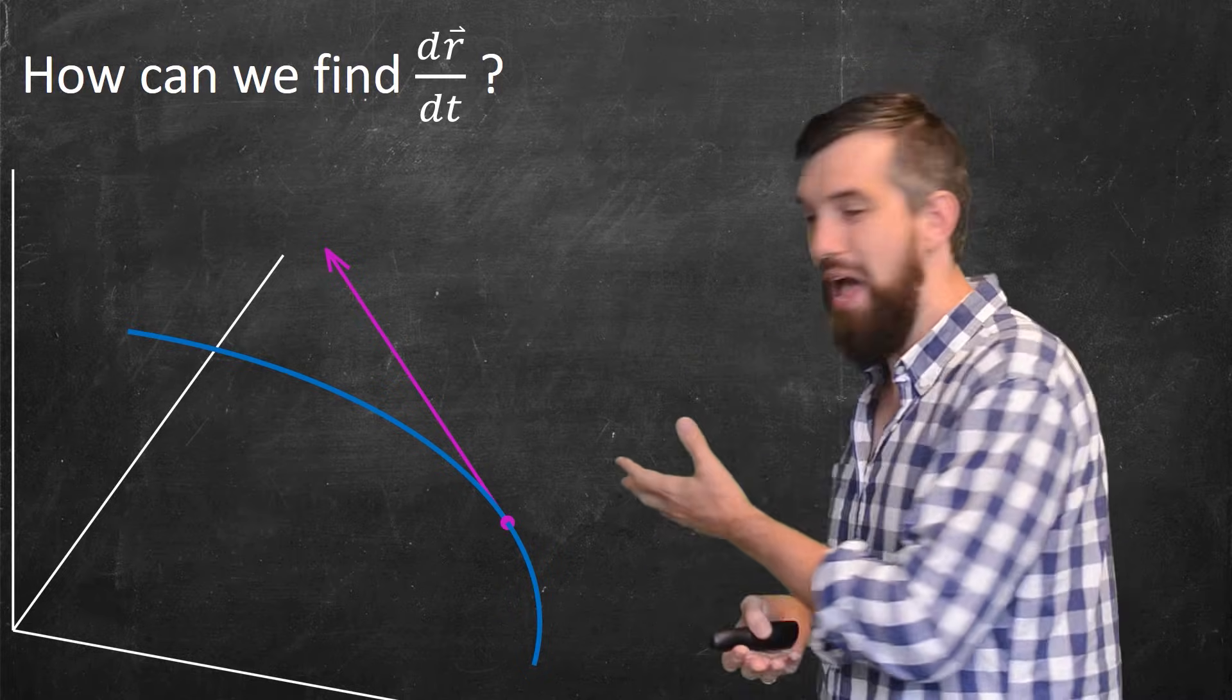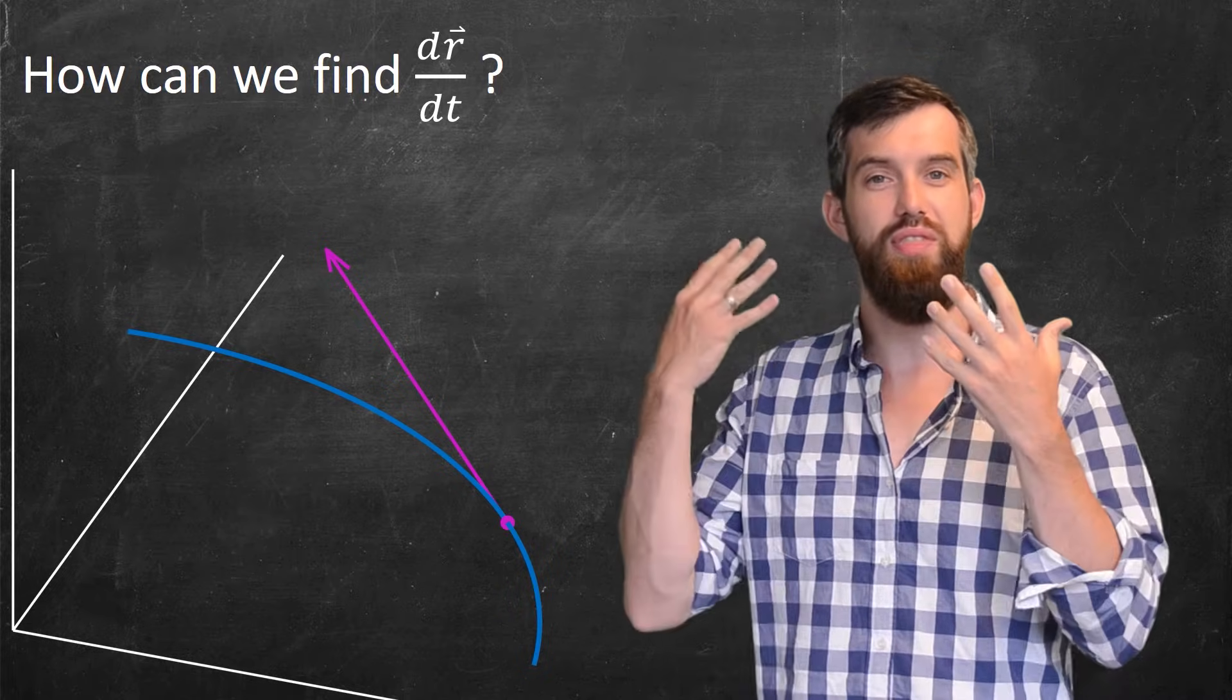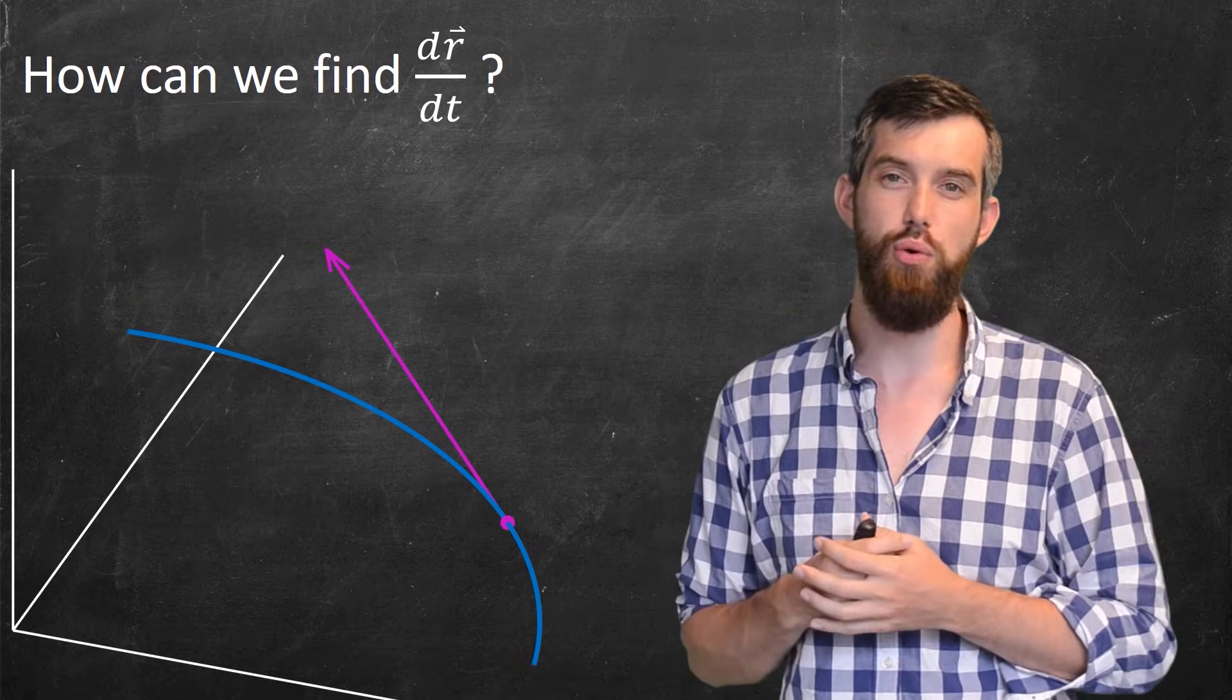I've zoomed in a little bit on my graph. I've got some particular point. I've got this tangent vector. That's what I want to go and compute.